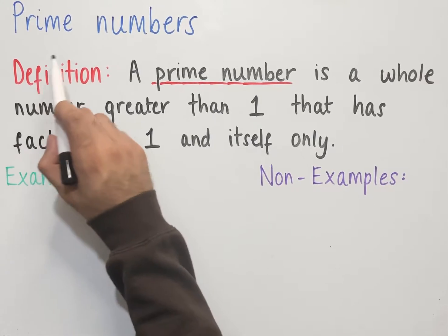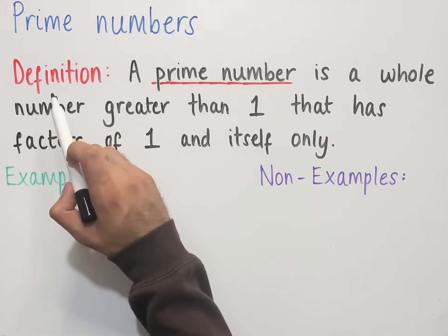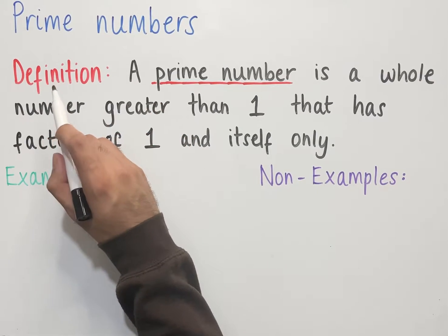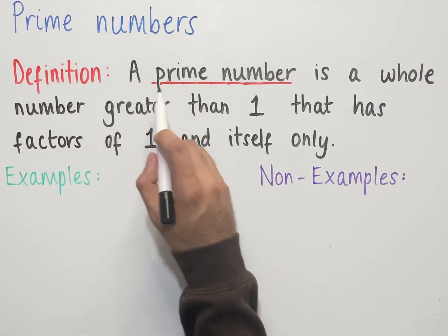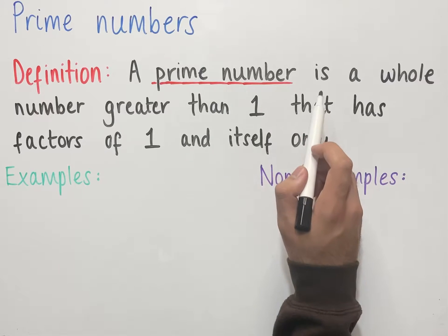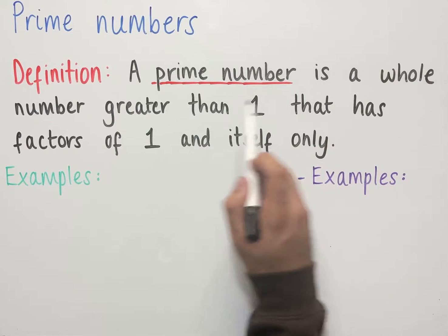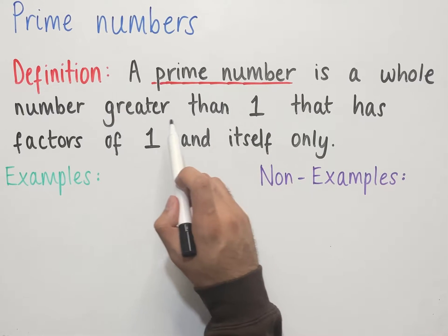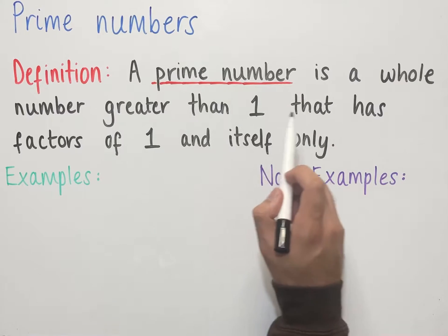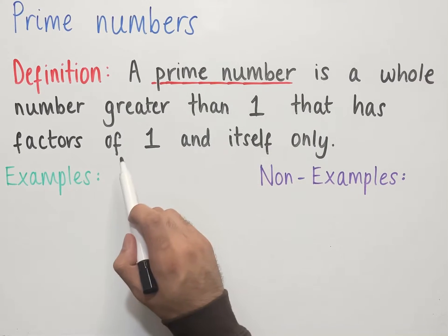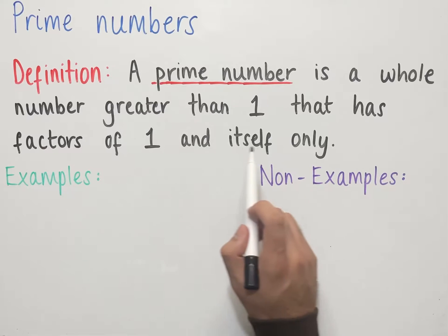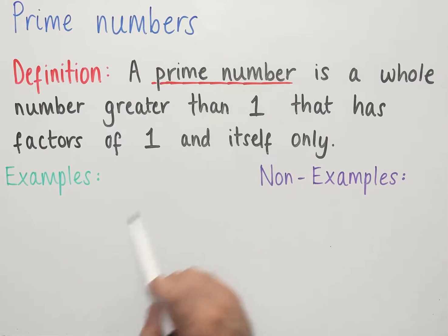Let's look at prime numbers. The definition of a prime number is: a prime number is a whole number greater than 1 that has factors of 1 and itself only.